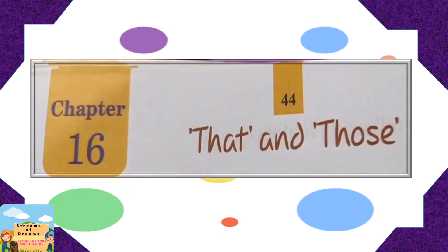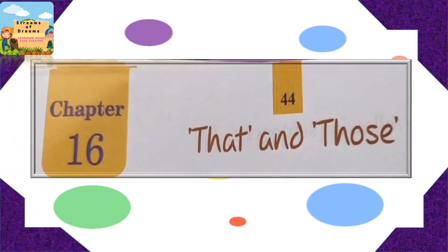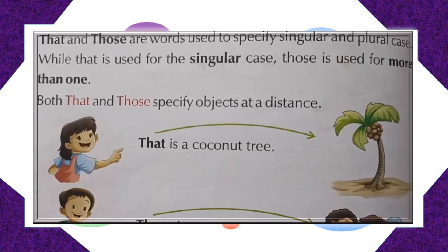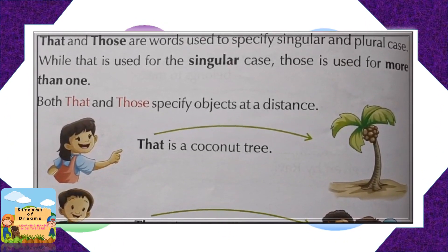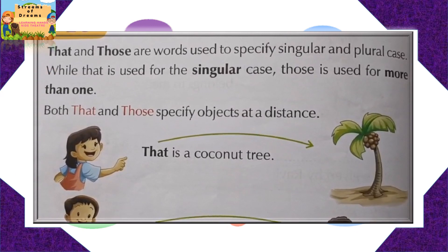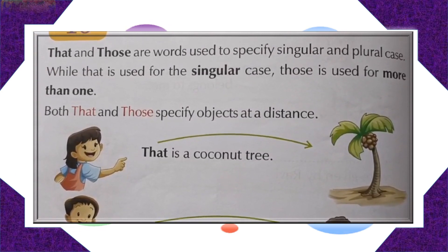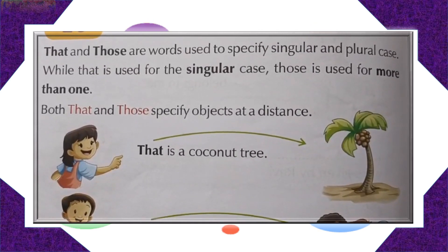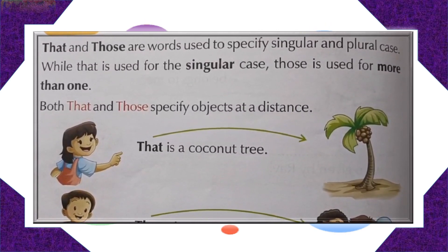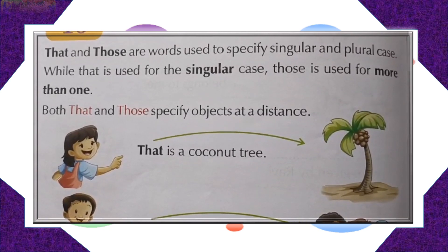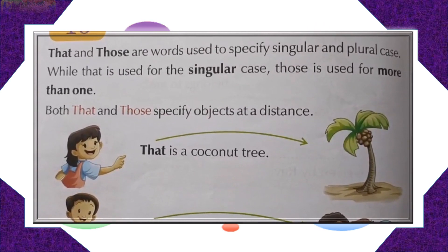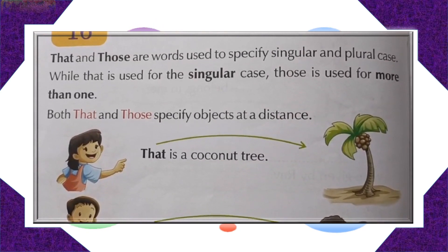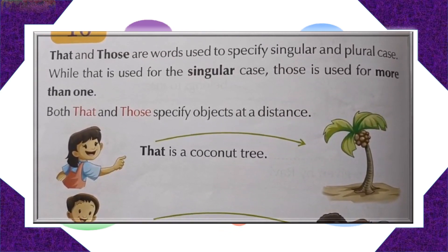Let's do Chapter 16, That and Those. That and those are words used to specify singular and plural case. Like what? While that is used for singular case, those is used for more than one. Let's see how it is. Both that and those specify objects at a distance.